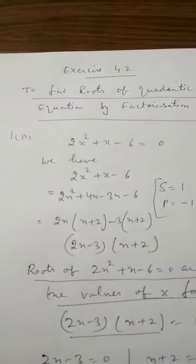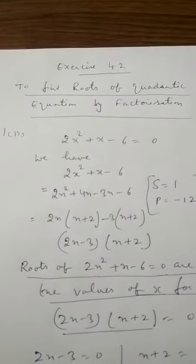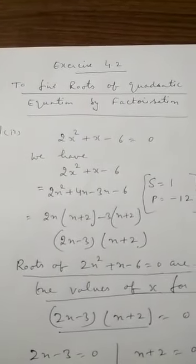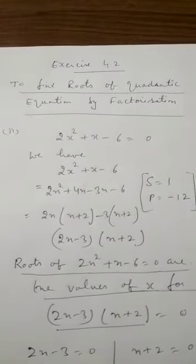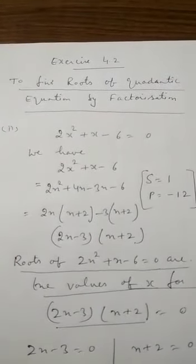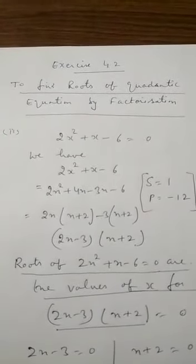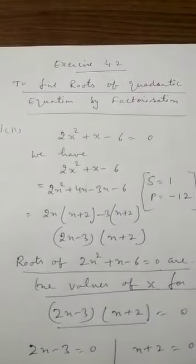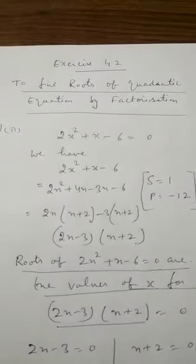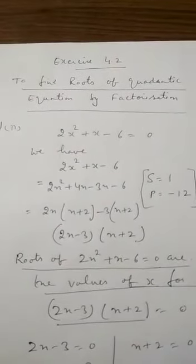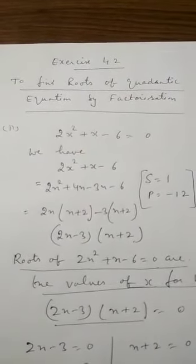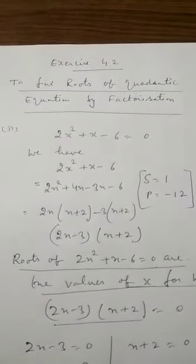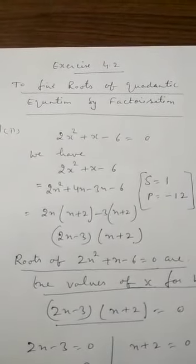Consider the quadratic equation 2x squared plus x minus 6 is equal to 0. All of you know how to factorize the quadratic equation by splitting the middle term. I have 2x squared plus x minus 6. The middle term is to be split in such a way that the sum of numbers is 1 and the product is 2 into minus 6, that is minus 12.